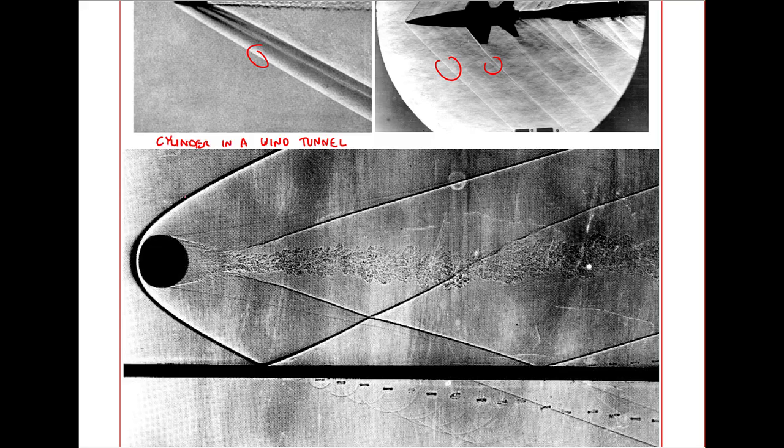Here's a cylinder in a wind tunnel. This is a bow shock, which is normal at first but then becomes oblique later on. This is actually a reflected oblique shock. This oblique shock from the bow wave hits the wall and reflects off.